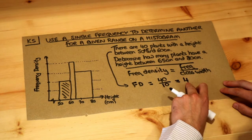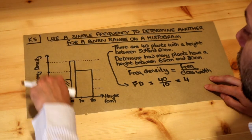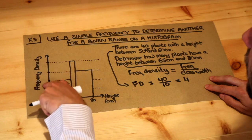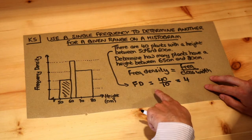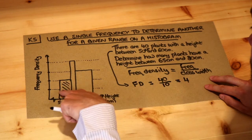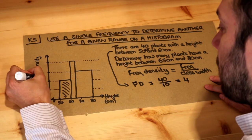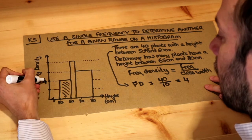And that frequency density of 4 allows us to work out the scale on the frequency density axis, because you might have noticed that we don't have any values on here—that's missing. But we've used this information to work out the scale. We know the frequency density of this first bar is 4, so the top of that bar, that must be a value of 4 corresponding to the top of the bar.